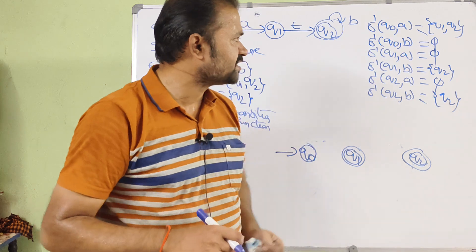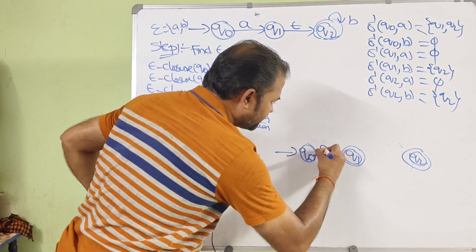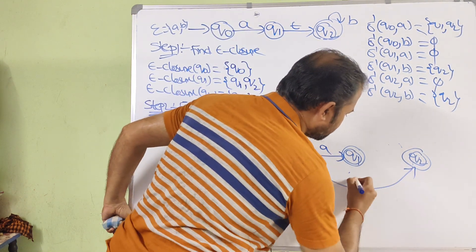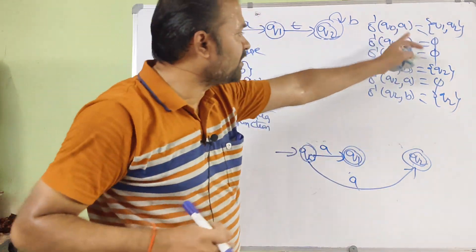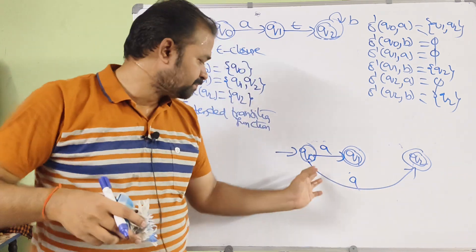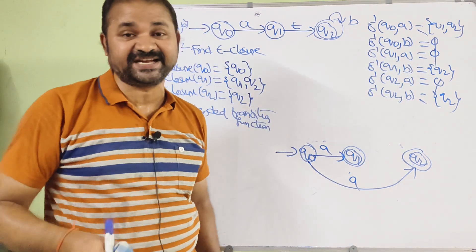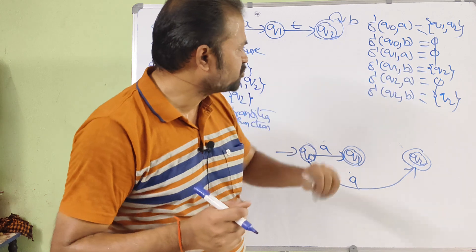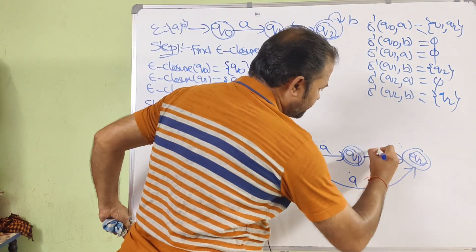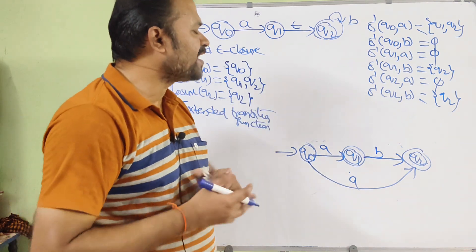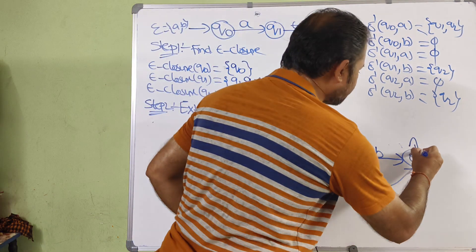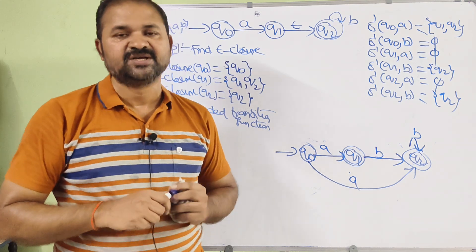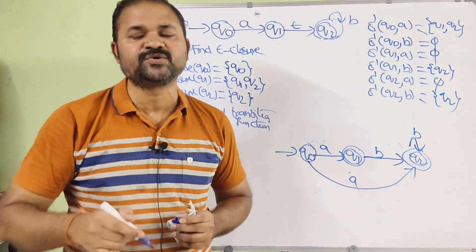Now let us draw the transition diagram for the NFA without epsilon transitions. δ̄(Q0, A) = {Q1, Q2}, so from Q0 on input A we go to both Q1 and Q2. δ̄(Q0, B) = ∅, so no transition. δ̄(Q1, A) = ∅, no transition. δ̄(Q1, B) = {Q2}, so Q1 on B goes to Q2. δ̄(Q2, A) = ∅, no transition. δ̄(Q2, B) = {Q2}, so Q2 on B loops to Q2. This is the NFA diagram without epsilon transitions.